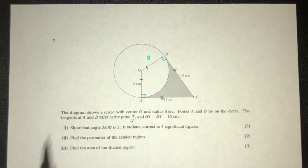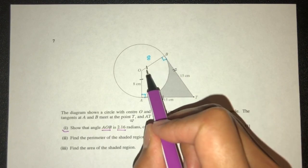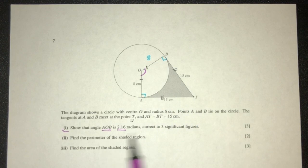We have this, this is 15, part 1. Now we have to show the angle AOB is this. AOB will be this angle, correct to 3 significant figures. So how can you show this? Pretty easy.